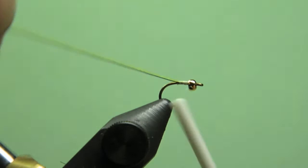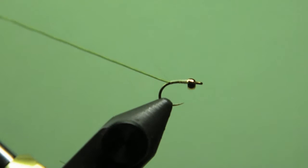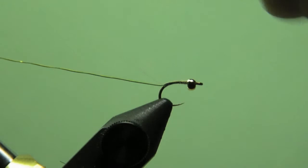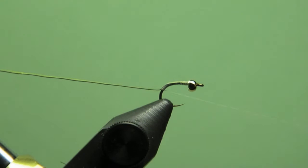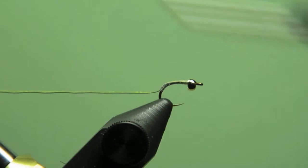Now just advance the thread right down the hook and you're going to make it nice and skinny. You don't want to use too many wraps. That's why this Gudibrod 10-0 is really nice for that. About midway down that scud hook, go ahead and advance your thread back to the bead.